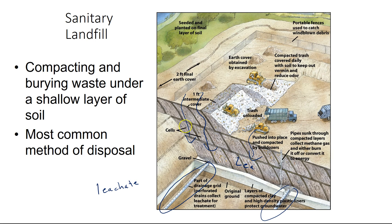We have water collection systems, and then what's called lining — layers of durable rubber, plastic, and clay to make an impermeable barrier. As water percolates through, it's essentially channeled not into the soil but directly to the leachate collection system. That is how a sanitary landfill works.